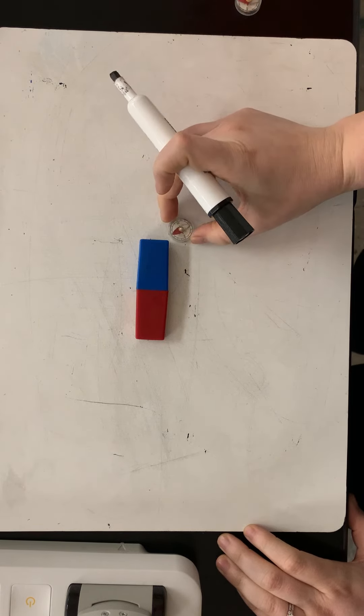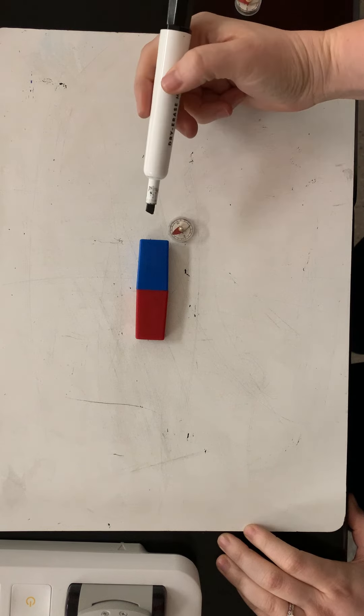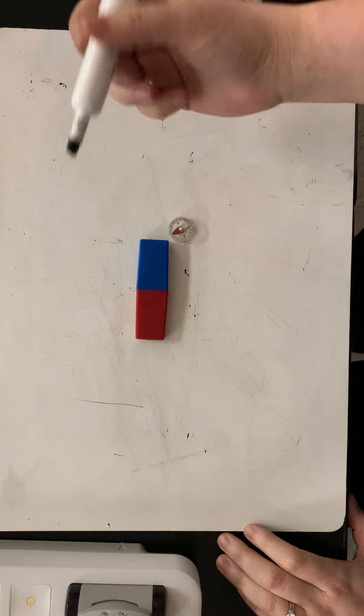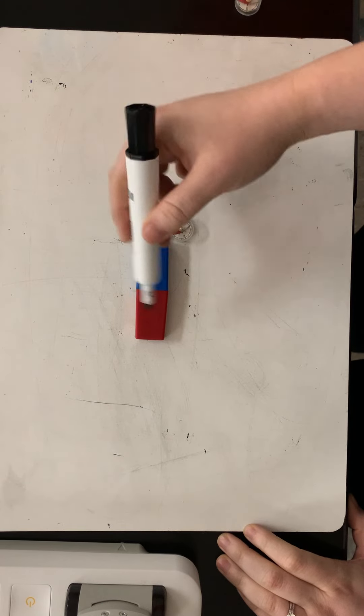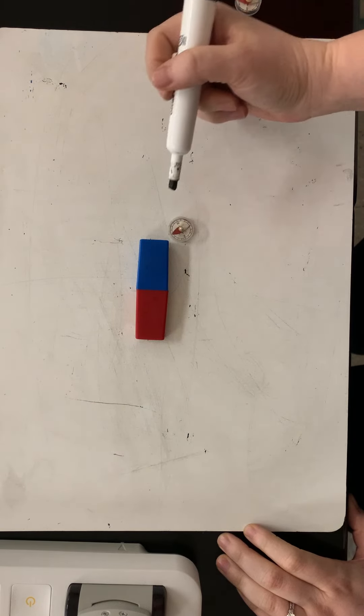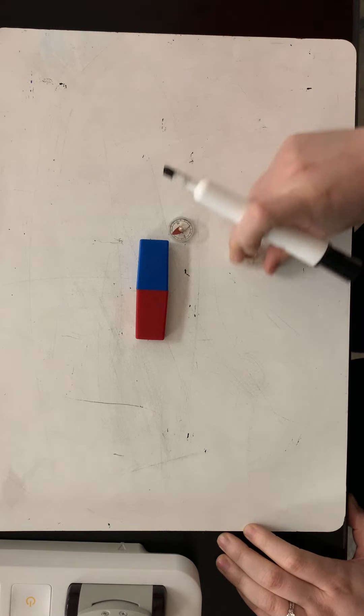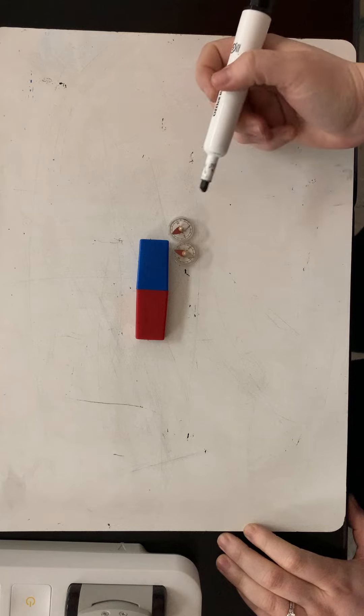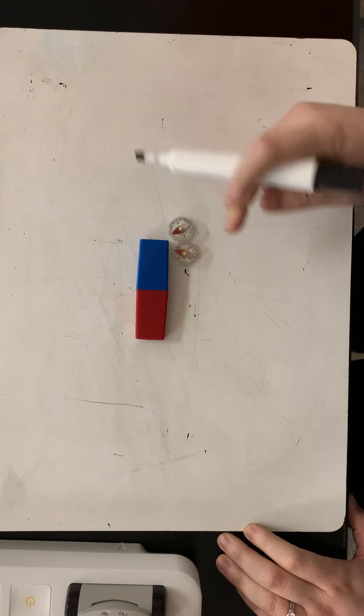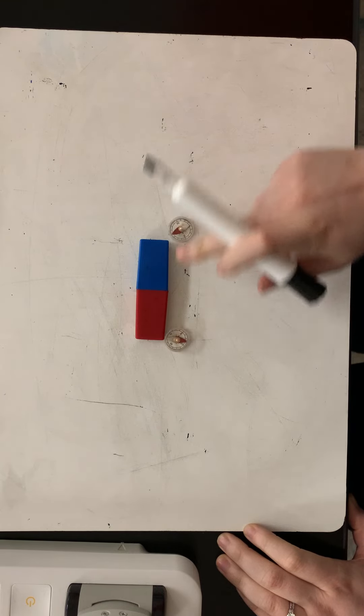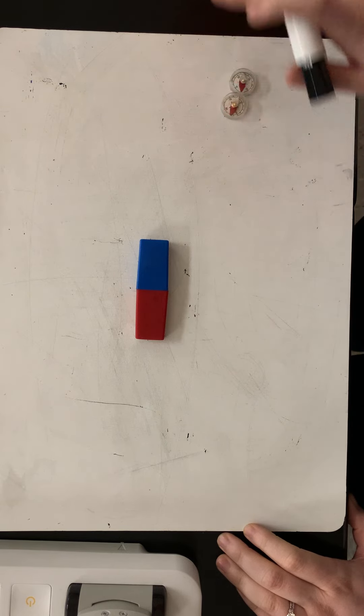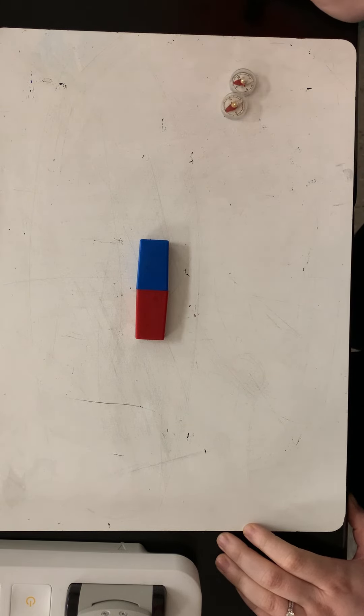So the compass as we all know has a little needle that likes to point towards magnet things like the earth or a permanent magnet or an electromagnet. Now you have to figure out your personal compass because every compass has different color codes. For this example the red side is pointing at blue and the white side is pointing at red. For today I'm gonna say that the white side is forward but does it matter? Not at all.